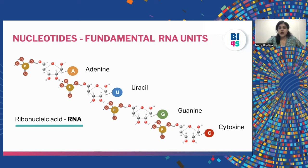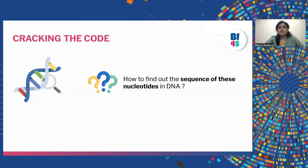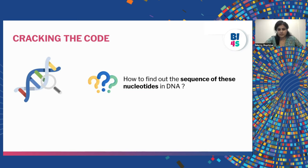So A, T, G, and C together form a sequence and the fundamental building blocks of our genetic material. The question is: how do we find out the sequence or the order in which these nucleotides are arranged in our DNA? It can be arranged as A, T, G, C or in any other order. To find out the order in which these nucleotides are arranged, we have a technique called DNA sequencing.